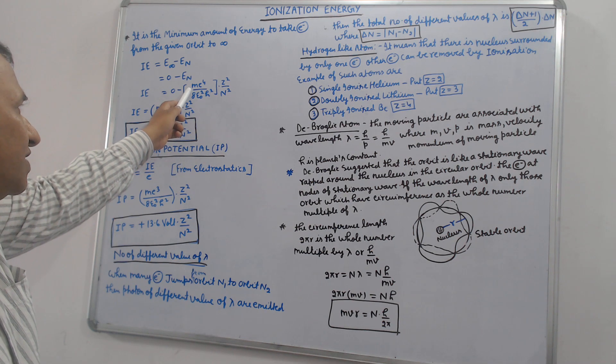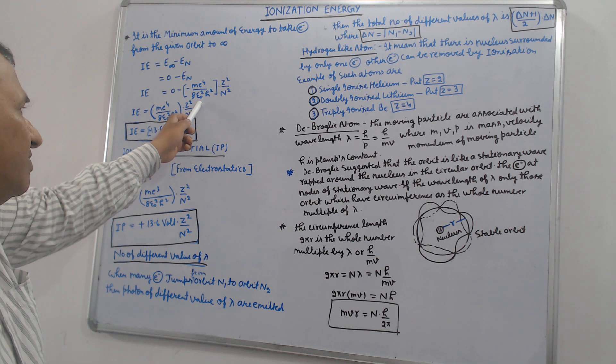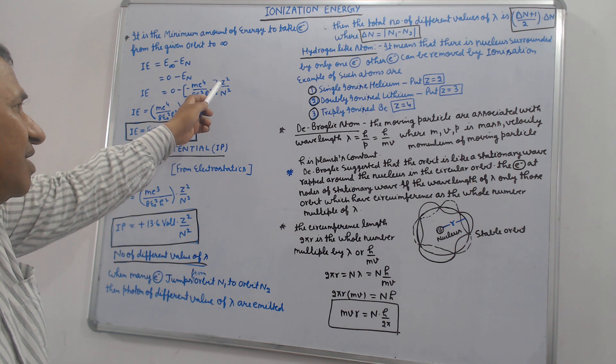M is mass of electron, e is electronic charge, ε₀ is permittivity of free space, h is Planck's constant, Z is atomic number.